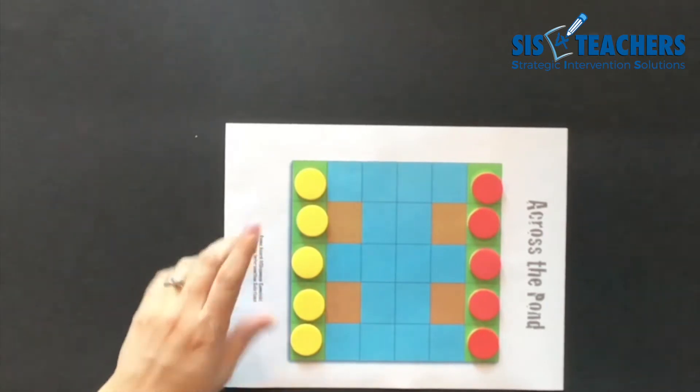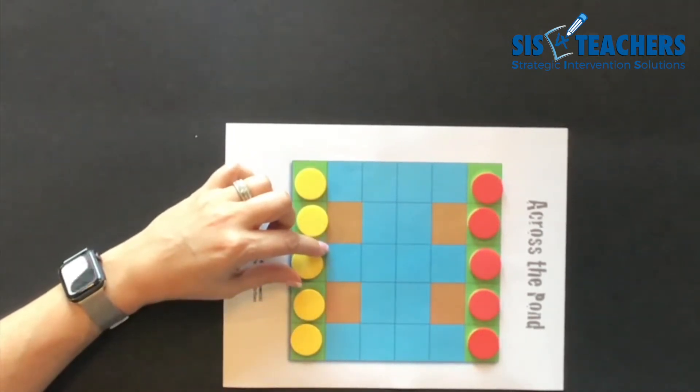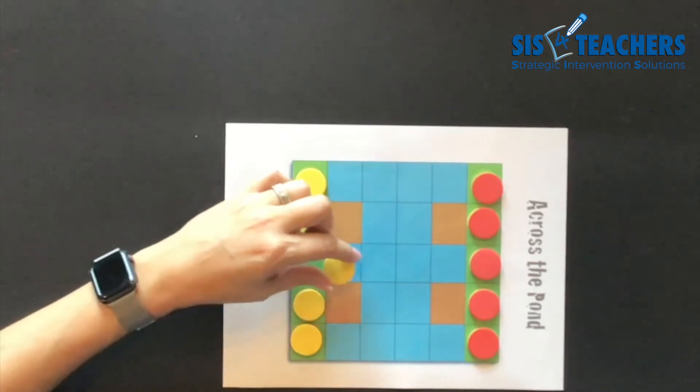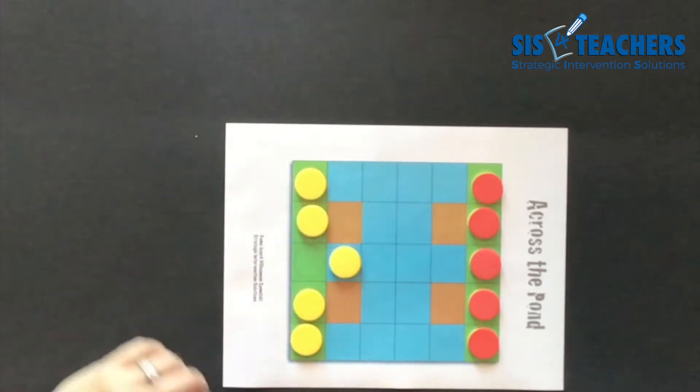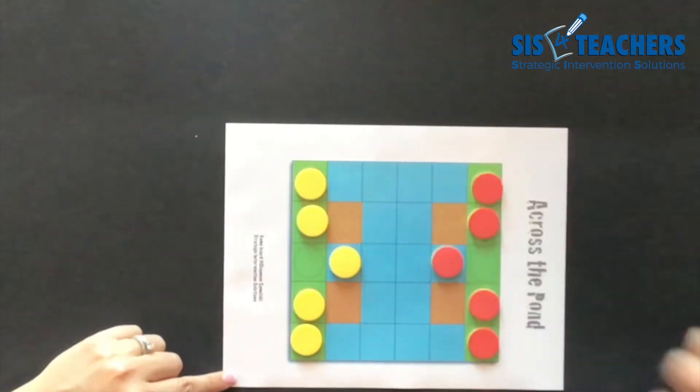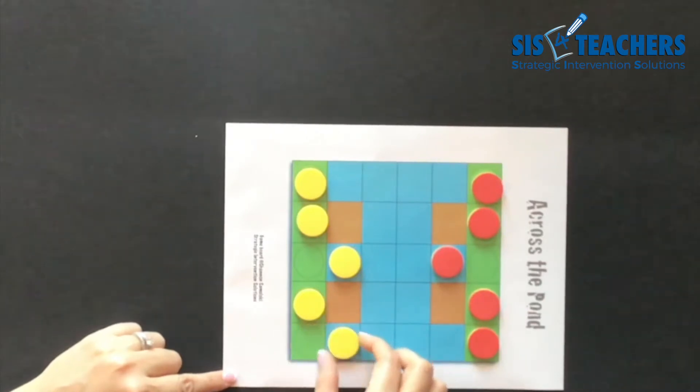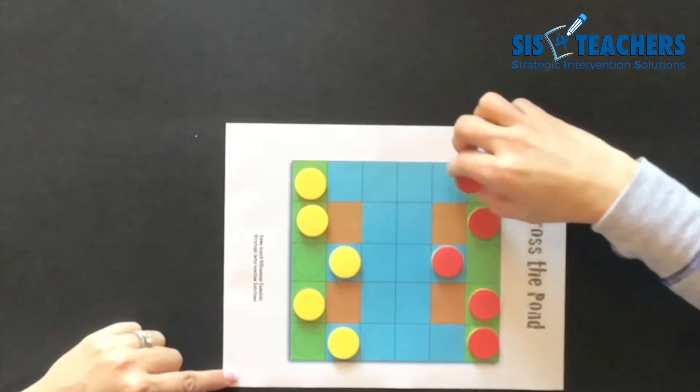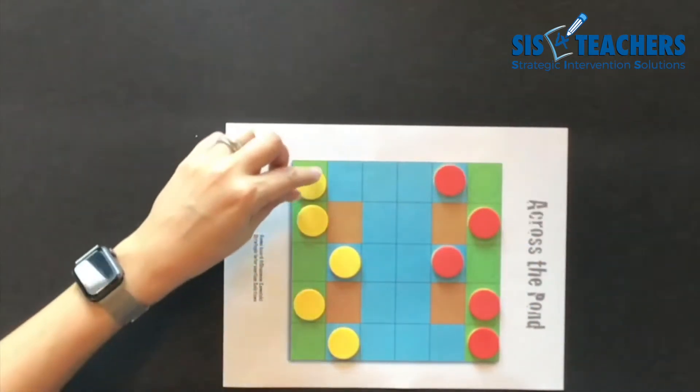So I'm going to go ahead and go first. In level one, you only move one frog at a time to give the kids a general idea. Level two makes it a lot more complex. I'm going to see where we can go on the board to get us across the other side.